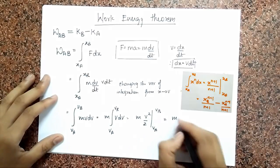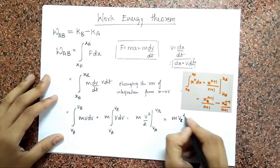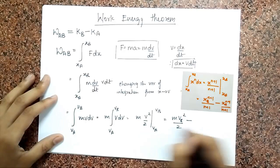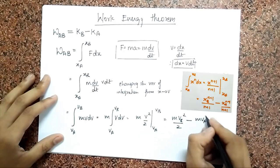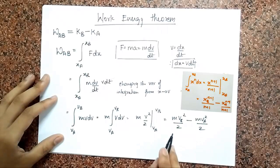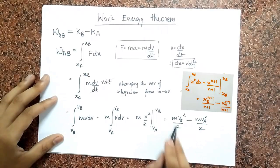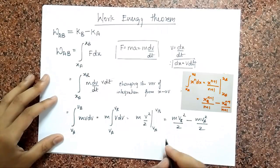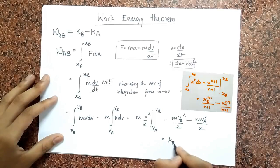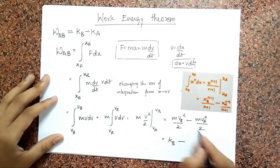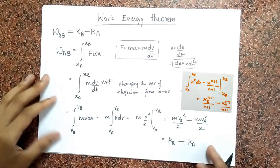And so now I substitute the upper limit, so that's VB squared over 2 minus the lower limit, VA squared over 2. And notice what I have over here is a half MV squared at B, so that's the kinetic energy at B. And this is the half MV squared at A, so that's the kinetic energy at A.